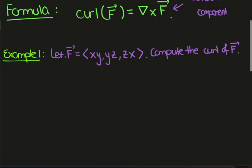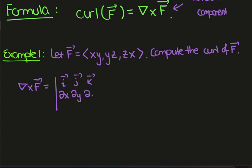Let's look at a specific example where we have the vector field described by (xy, yz, zx) and we want to compute the curl of this vector field. We'll compute grad cross F-hat, and that's given by looking at the determinant of this matrix. We'll have grad in the first row, then xy, yz, and zx in the third row.